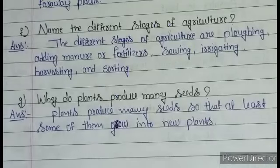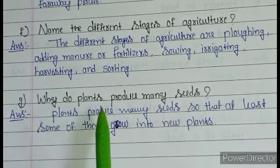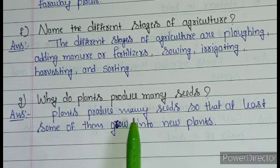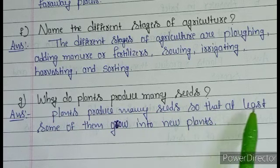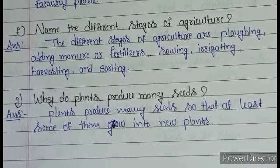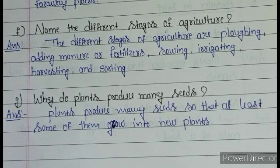Question G: why do plants produce many seeds? Answer: plants produce many seeds so that at least some of them grow into new plants. Majority of plants produce many seeds, and at least some of the healthier seeds grow into new plants.